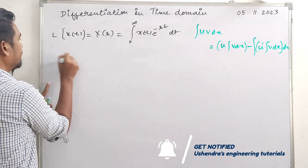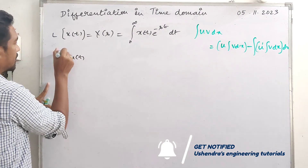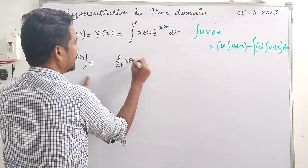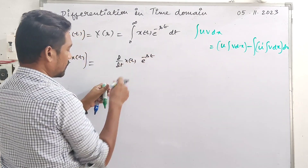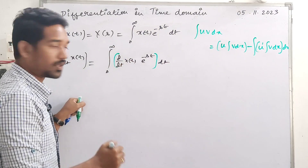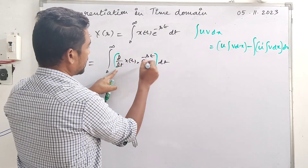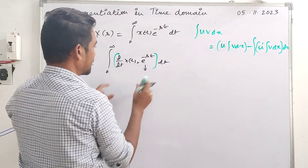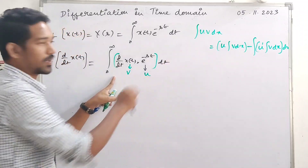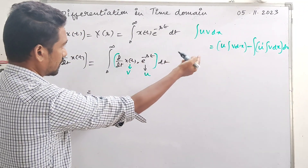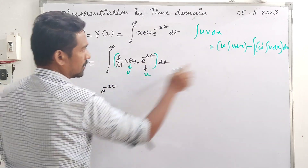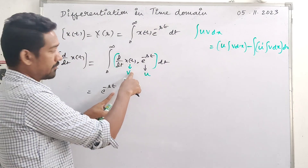For x(t), the procedure for the Laplace transform of D/dt of x(t) is the same. We integrate D/dt of x(t) multiplied by e raised to minus st from 0 to infinity with dt. We have two factors: e raised to minus st, which is U, and D/dt of x(t), which is V. We expand using the UV integration rule: U as it is, meaning e raised to minus st, multiplied by the integral of V, which is the integral of D/dt of x(t).